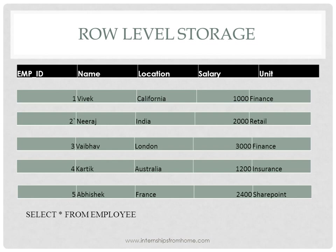How is data stored in a row level storage database like Oracle? In a row level storage database, each row is stored separately — a particular row will have all its columns stored together in one location. So we have the first row stored in one place, then the second row and so on. When you run a query like SELECT * FROM employee, it picks data from the first row, then the second row, and so on.